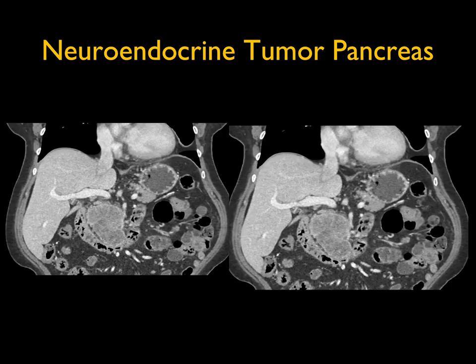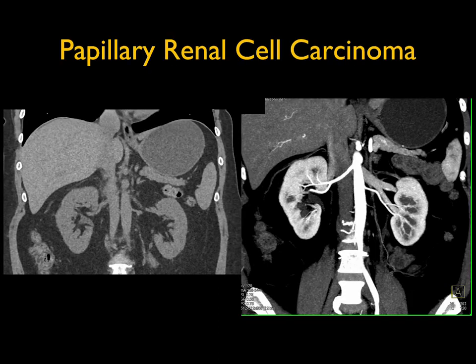There's some splaying of the vessels, very nicely shown on the coronal view. This was a difficult neuroendocrine tumor because it's so cystic — you might wonder if it could be a serous cystadenoma or an MCN. But remember that although neuroendocrine tumors are often thought of as very vascular, they're not always.